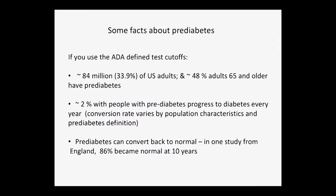Let me give you some facts about pre-diabetes. If you use the American Diabetes Association-defined test cutoffs — these are the current guidelines — then about a third of the U.S. population has pre-diabetes. And about half of adults 65 or older have pre-diabetes.